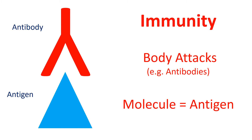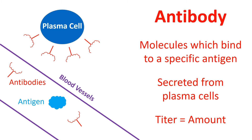On the other hand, immunity is when your body attacks a specific molecule. Here we will focus on antibodies, which are attack molecules targeting a specific antigen. An antibody has a specificity for a single antigen. Antibodies are made by plasma cells and are distributed throughout the body. The term titer refers to the amount of antibody.